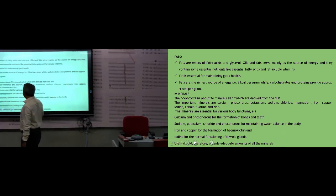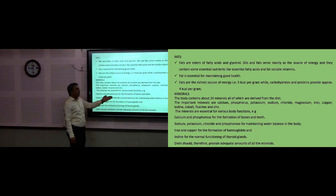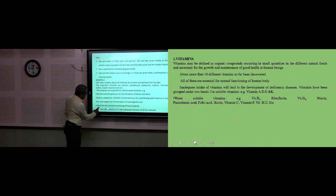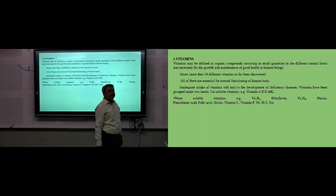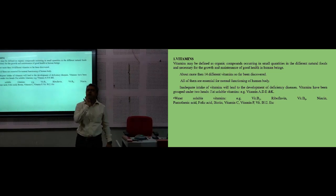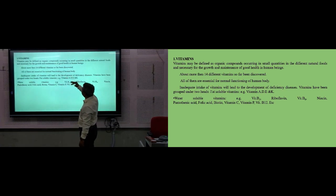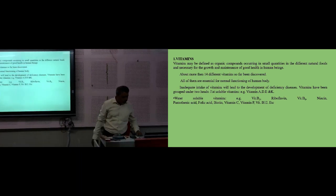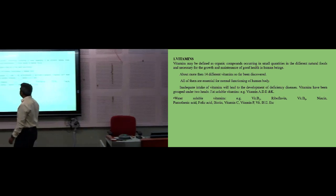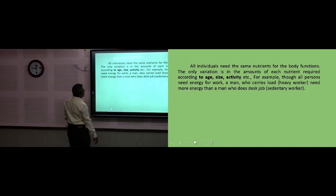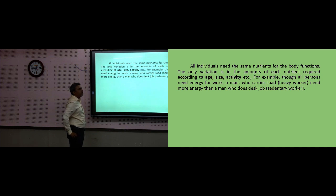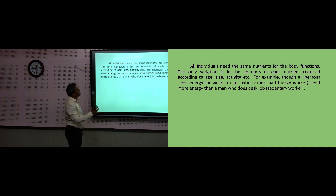Vitamins — as mentioned previously — are composed of fat-soluble and water-soluble types. Many different vitamins have so far been discovered and are very essential for our body. These are all about the components of food, classification of foods, and their functions — all essentially for our body. All individuals need the same nutrients for body function; the only variation is in the amount of each nutrient. You cannot give the same moderate or sedentary work energy requirement to a person doing hard work. Desktop work requires lower energy.